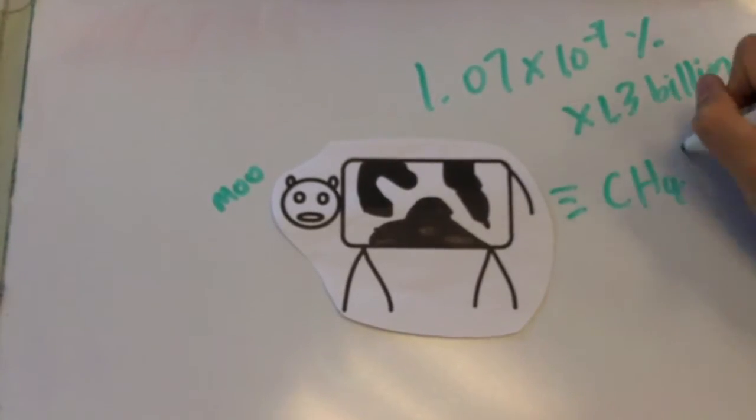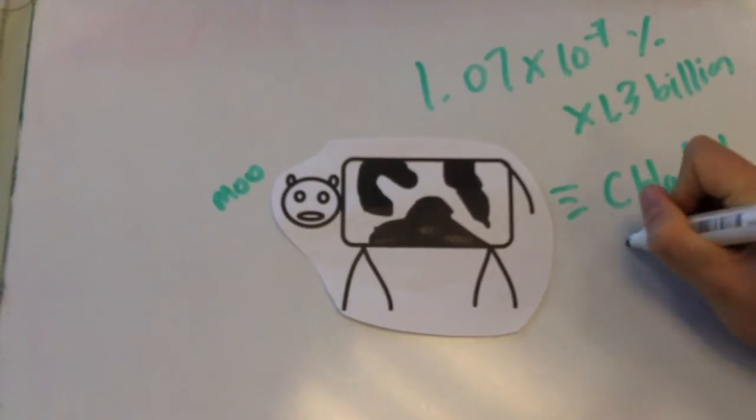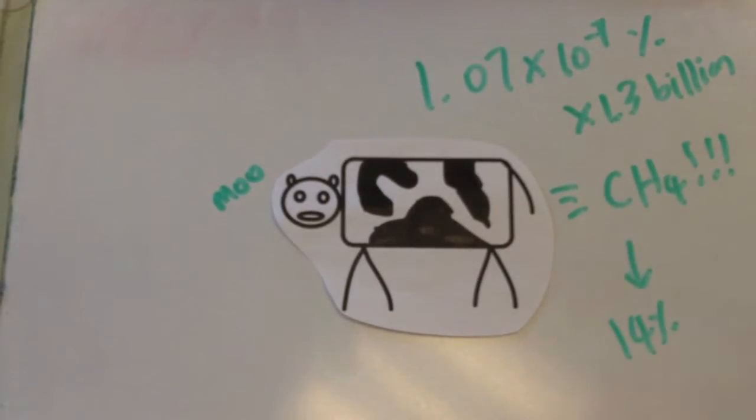When she farts, she releases methane gas. Cow farts account for 14% of all greenhouse gases. Greenhouse gases can cause global warming and harm our world. And this is positive externalities of production.